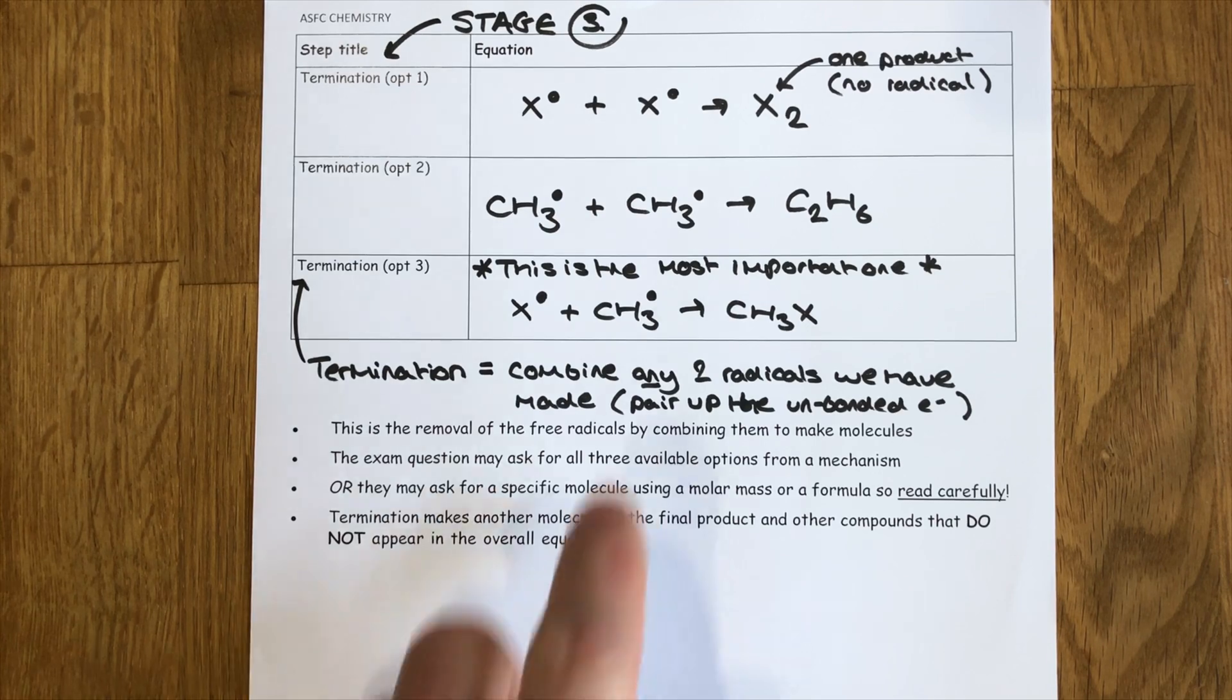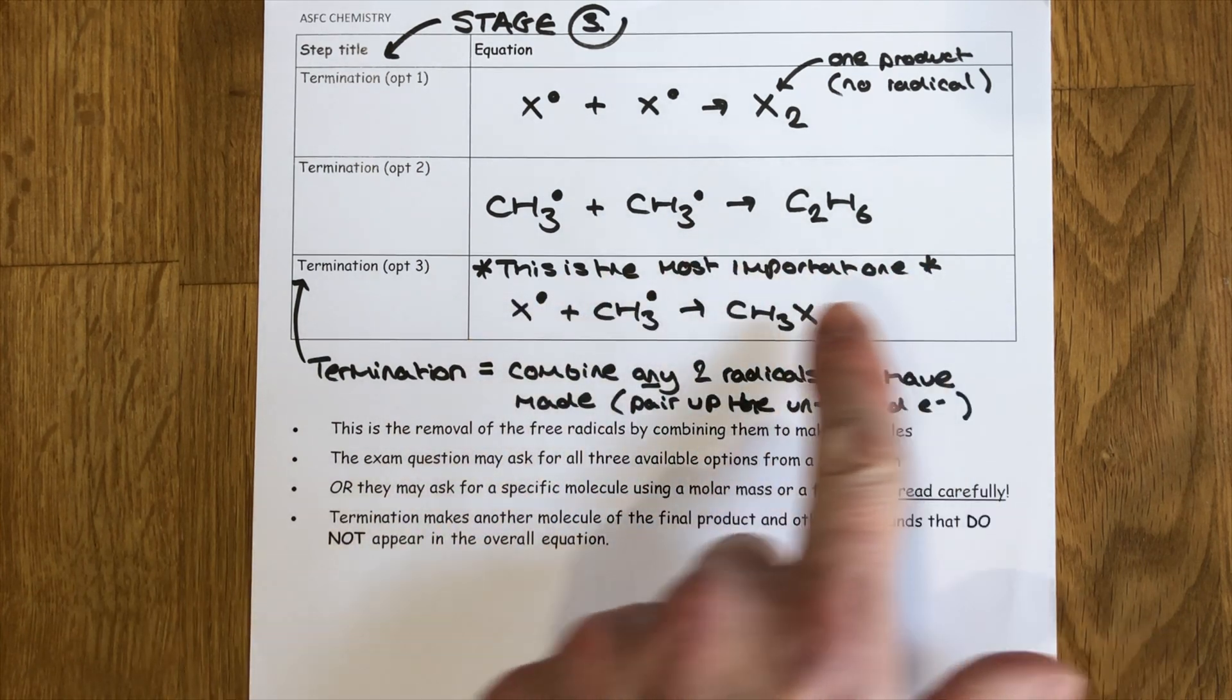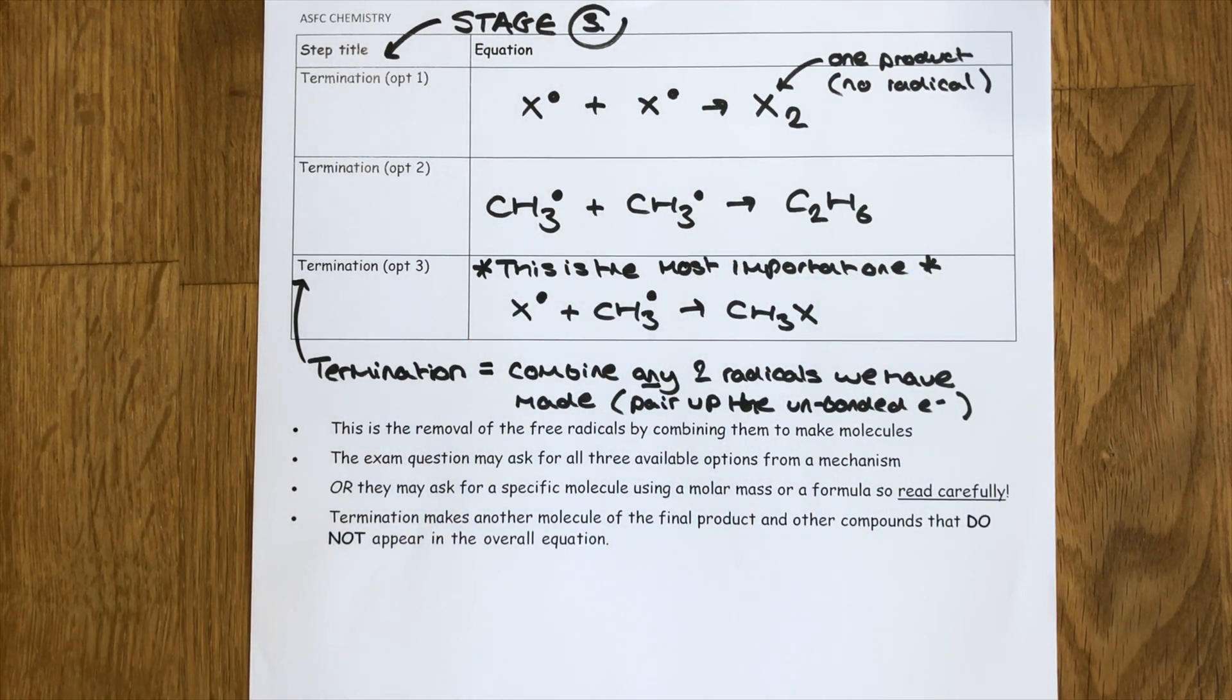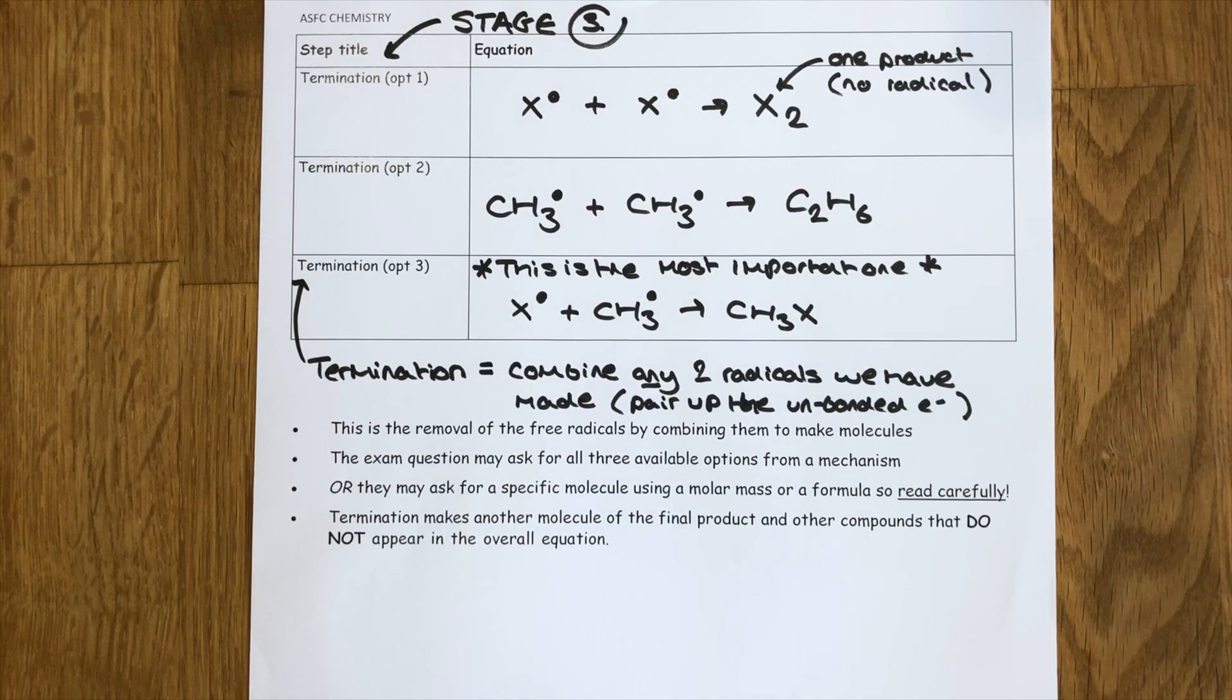They may ask for a specific termination equation in the exam. For instance, instead of just asking for the equation that shows the formation of the target organic haloalkane molecule, they may specifically say show a termination equation that forms a molecule with a particular molar mass. You'll have to make sure that you read the exam question really carefully to look out for things like that.